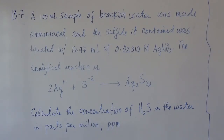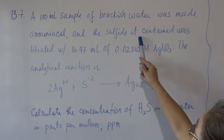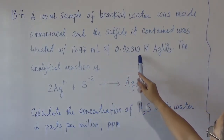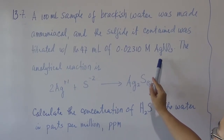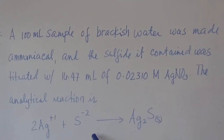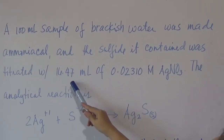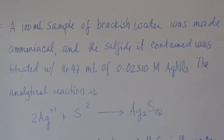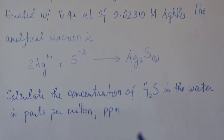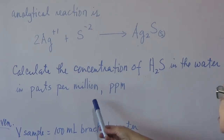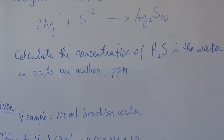The sulfide was being titrated with 0.0231 molar silver nitrate, and the volume needed to precipitate out the sulfide is 16.47 mL. We are going to calculate the concentration of hydrogen sulfide present in the water in the unit of ppm — parts per million.